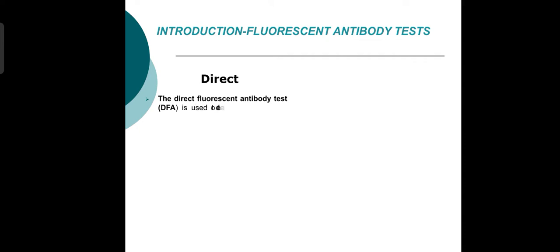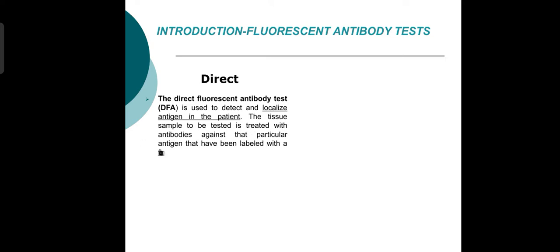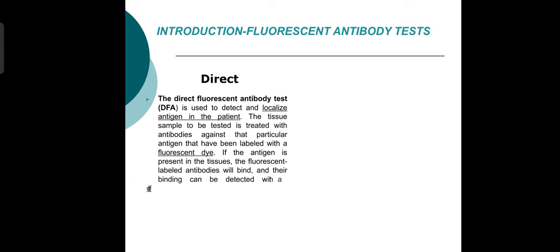Direct fluorescent antibody test: the direct fluorescent antibody test is used to detect and localize antigen in a tissue sample. The tissue sample to be tested is treated with antibodies against that particular antigen, which have been labeled with a fluorescent dye. If the antigen is present in the tissue, the fluorescent-labeled antibody will bind to it.